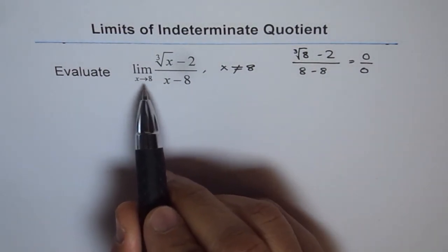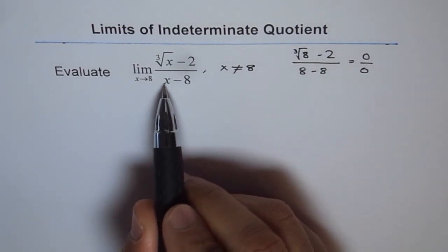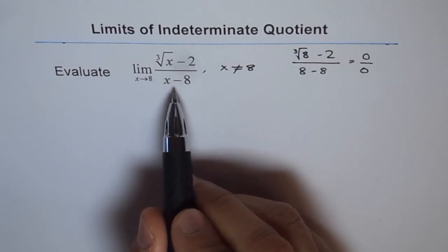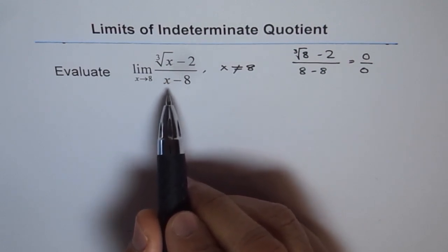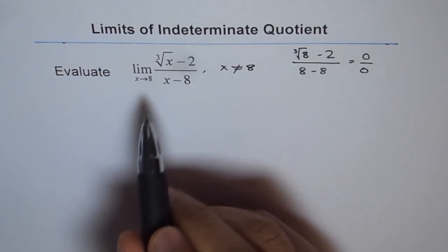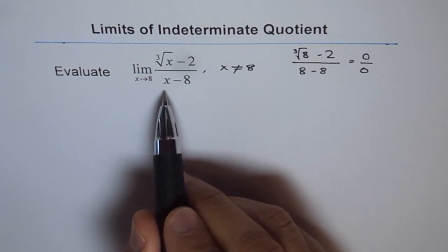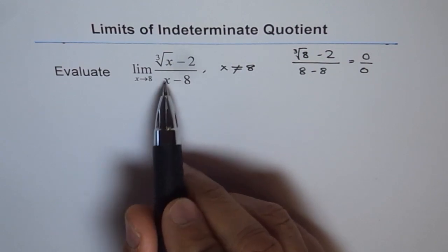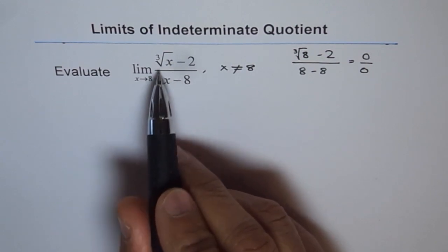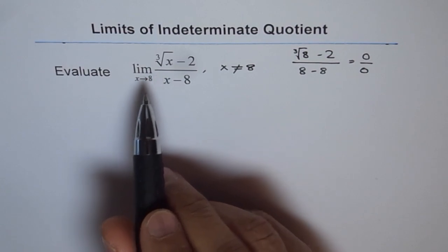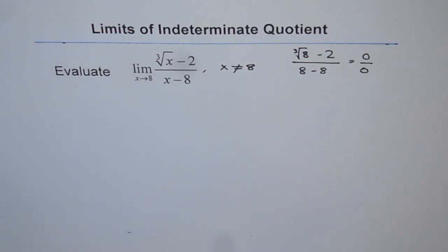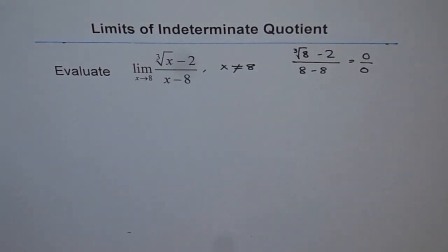If by substituting 8 we are getting 0 over 0, that means 8 is a factor of the numerator and also a factor of the denominator. So we could have done factoring, but with radicals, factoring is very difficult to do.